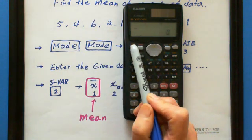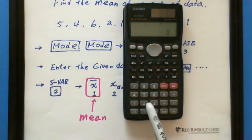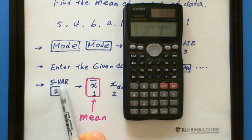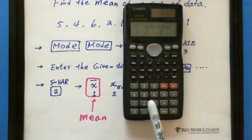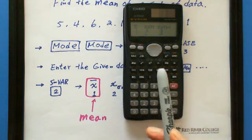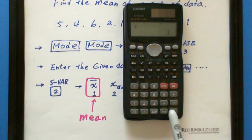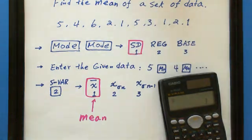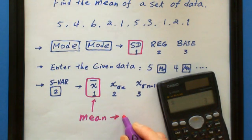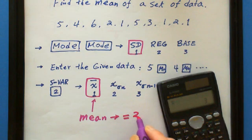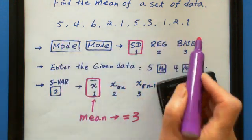So we go to shift, S VAR, enter 2. This one is mean, you can find it at 3. The mean equals 3 for this data.